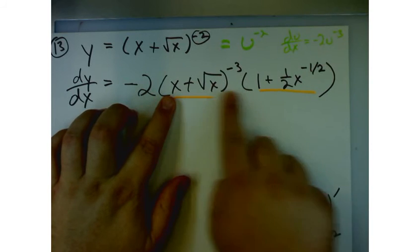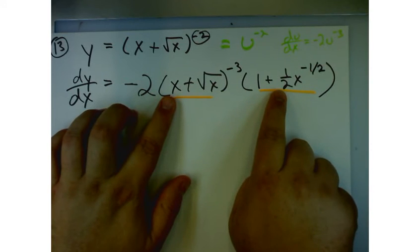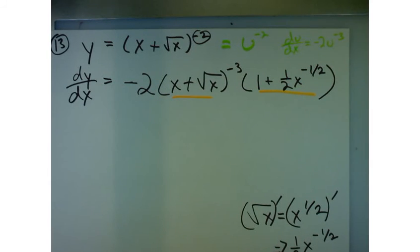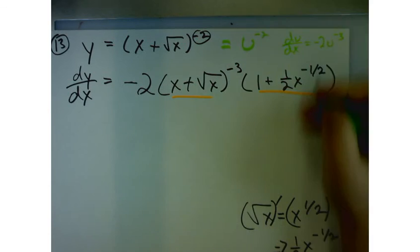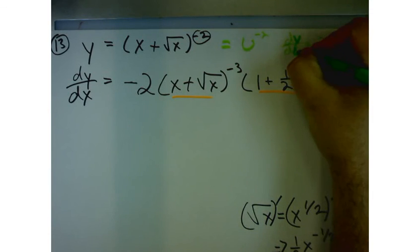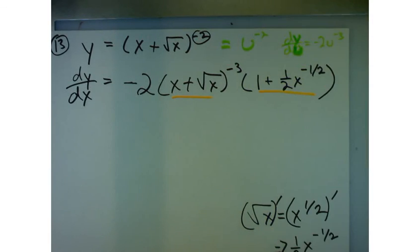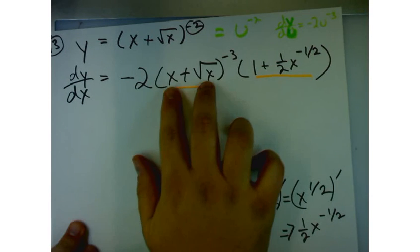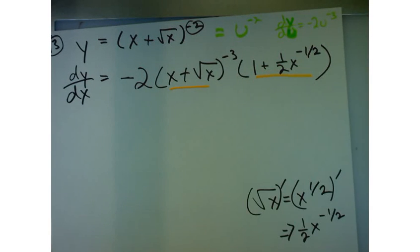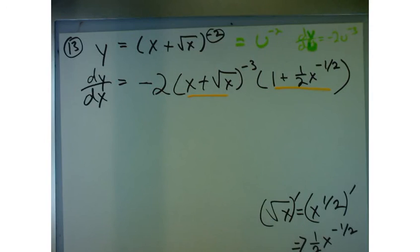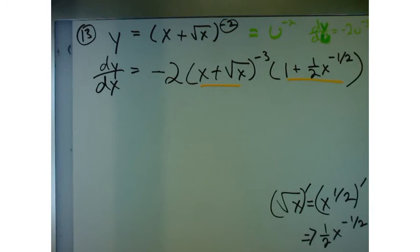Actually, this is dy du, right? I wrote this down wrong. This is dy du. And then I'd have to take the derivative of u with respect to x. So I take the derivative of this with respect to x. Does that make sense? Yeah. Hey, Mr. Adams. Yes.